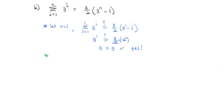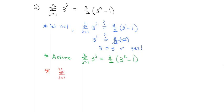If the base case works, then we assume — and it is important you write the assume step down — that the sum as j goes from 1 to k of 3 to the j is 3 halves times 3 to the k power minus 1. We assume it works for k. What we want to show then is the sum as j goes from 1 to k plus 1 of 3 to the j is equal to 3 halves times 3 to the k plus 1 minus 1. We're only going to work on the left side to do that.